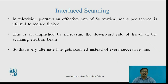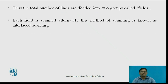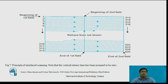The most important part is interlaced scanning. In television pictures, an effective rate of 50 vertical scans per second is utilized to reduce flicker. This is accomplished by increasing the downward rate of travel of the scanning electron beam so that every alternate line gets scanned instead of every successive line. Thus the total number of lines are divided into two groups called fields; since each field is scanned alternately, this method is known as interlaced scanning. The scanning starts from the top left-hand side, reaching the right side, and at the end of the first field it is at the middle of the line.